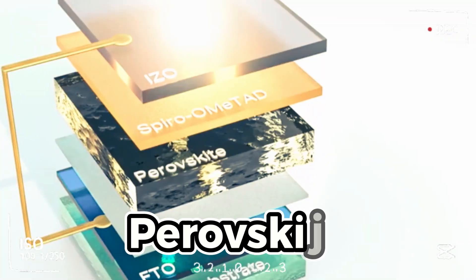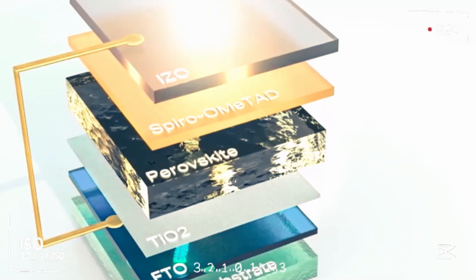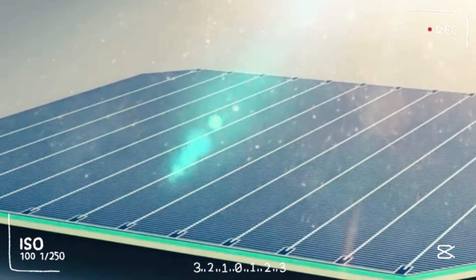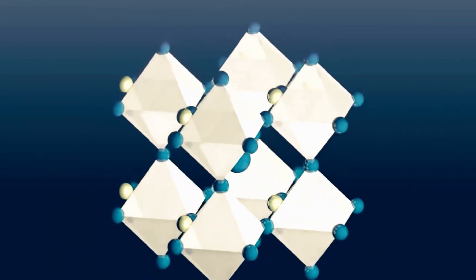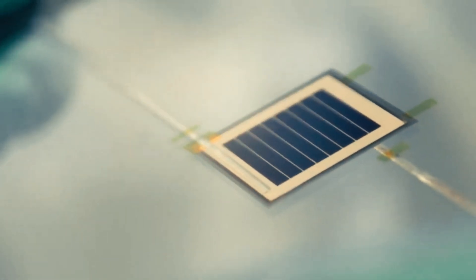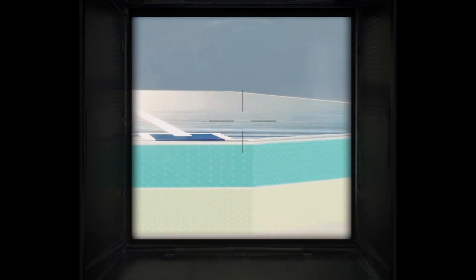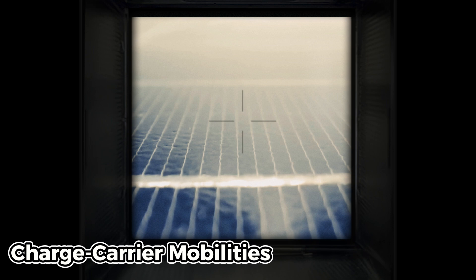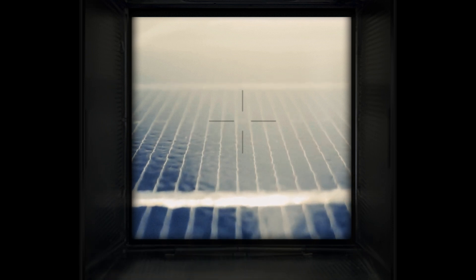Perovskite, a mineral found in nature, is often used in the solar industry to describe an artificial compound that mimics its crystal structure. These compounds are quite the talk of the town for their outstanding features: remarkable light absorption, charge carrier mobilities and lifetimes, all crucial qualities for top-notch solar cells.